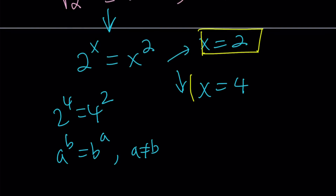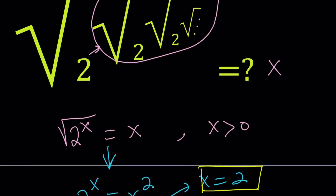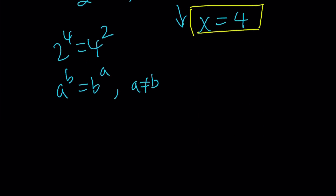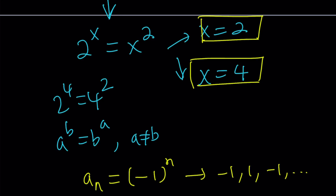So x equals 2 and x equals 4 are the solutions. But if this expression converges, can it converge to two different values? In that case it would be divergent. Consider the sequence negative one to the power n — it doesn't converge, it oscillates between negative one and one because its subsequences have two different limits, which is impossible for a convergent sequence. So we can't have two values; we have to discard one of them.